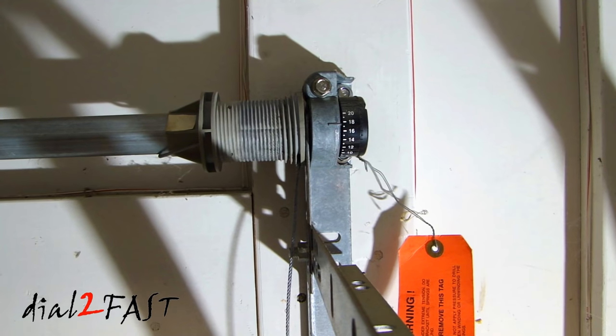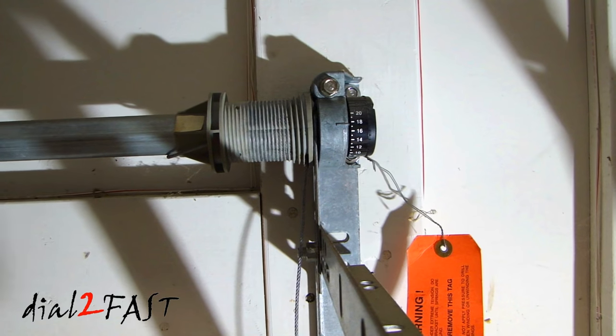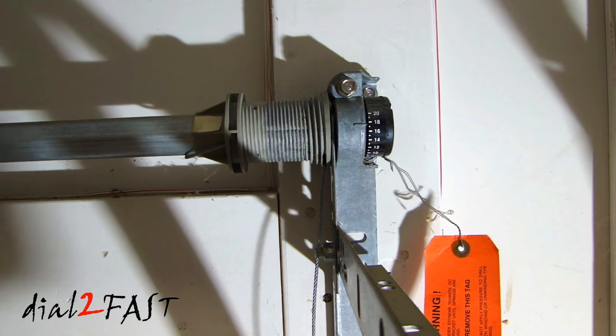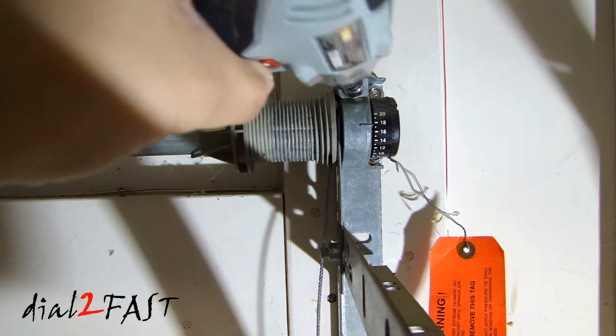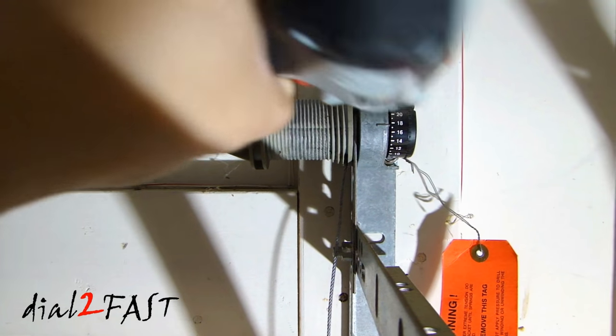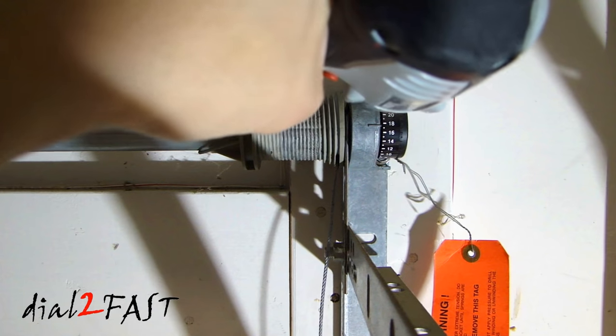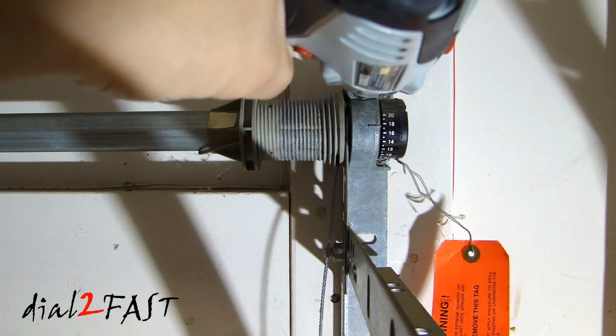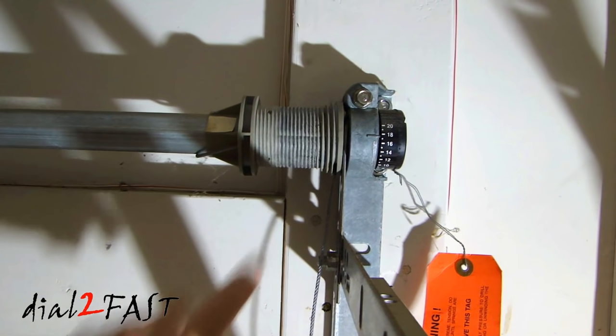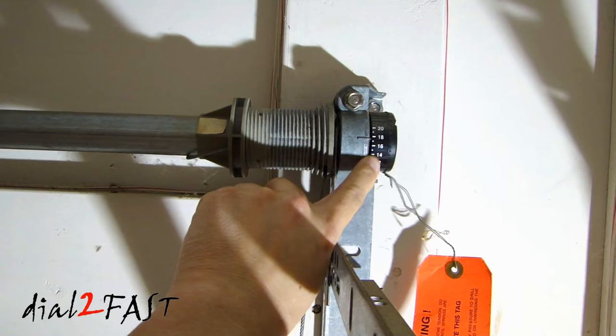Now this next step is necessary if you still have tension on the cable because the spring can hold a lot of energy. So what you want to do is use a driver. You cannot use an impact gun but an electric driver is ok. And you want to turn the 7/16 bolt counterclockwise. As you're turning this counterclockwise what you'll see is that this dial will slowly go back to zero.